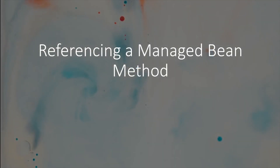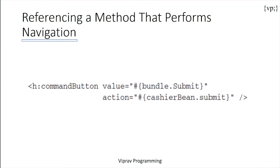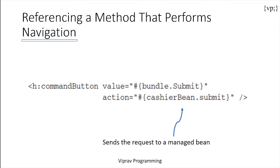Now let's get into referencing a managed bean method. Referencing a managed bean method that performs navigation — this action attribute can do two things. It can either return a logical string that tells the application what page to access, literally injecting a string into your URL which is then run automatically, or it sends a request to a managed bean which then returns a logical string to the web page, which then runs that URL.